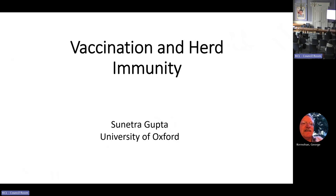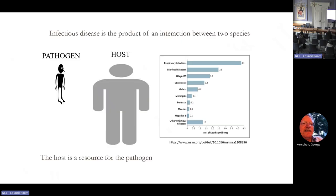That background took me into the world of ecology, where a lot of mathematical models are used to understand the interactions between species. Fundamentally, infectious diseases are a product of an interaction between two species, so a large subfield of theoretical ecology focuses on infectious disease. The idea is that if we understand these interactions at an individual and population level, we'll have better insight into how to deal with these issues.